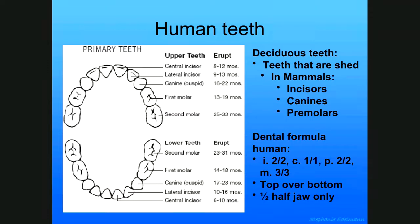The dental formula for humans is: two incisors on top and bottom, one canine on top and bottom, two premolars on top and bottom, and for adult teeth three molars on top and three molars on the bottom — and you're only counting half the jaw. You'll be asked for the dental formula at some point in one of the keys, which is why it's important.